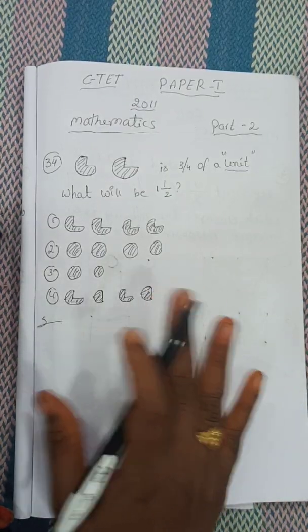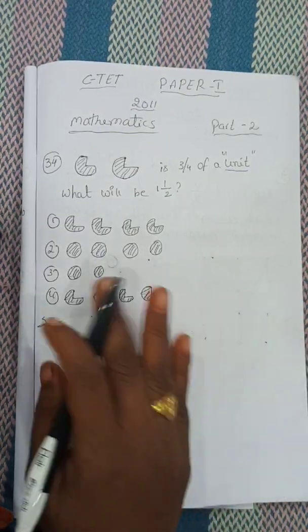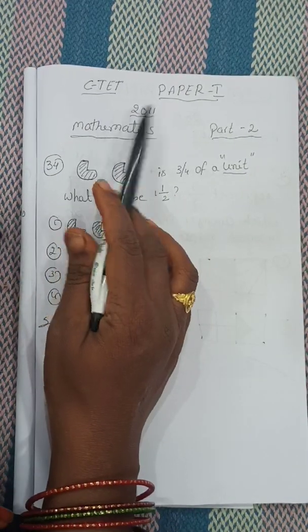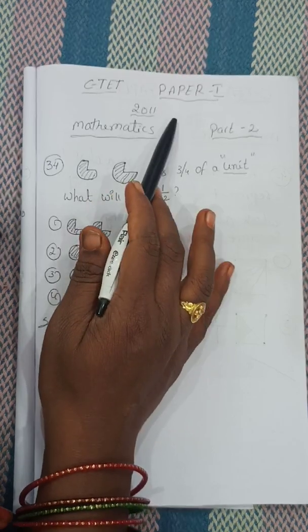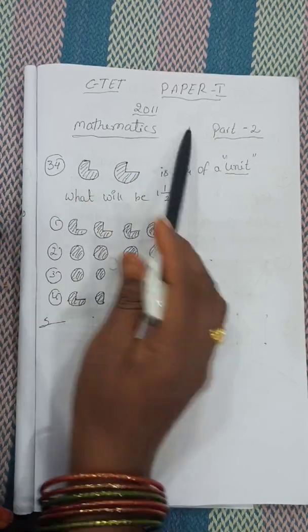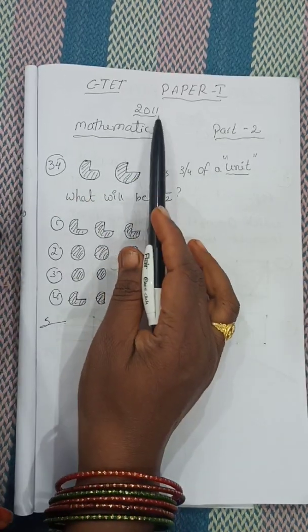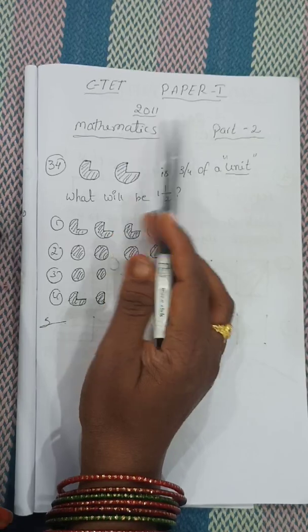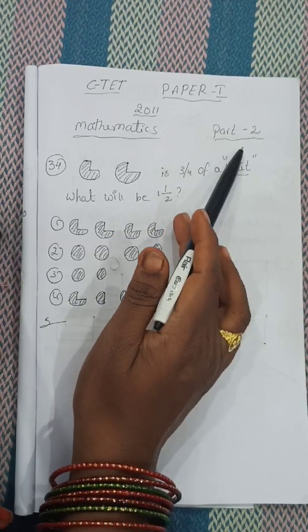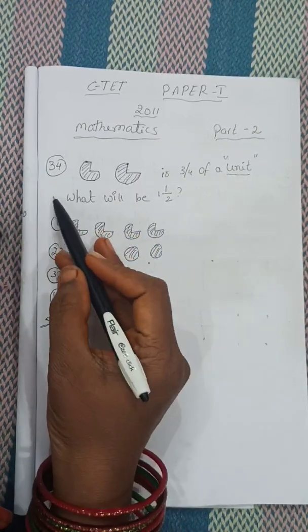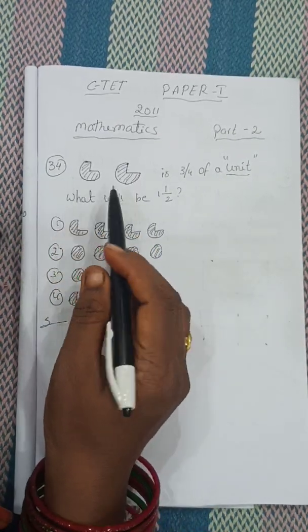Hi everyone, next topic. Seated, Paper 1, 2011, Mathematics Part 2. Today's sum is 34.